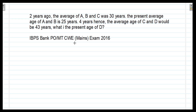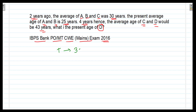Friends, the question is on the screen. Two years ago, the average age of A, B and C was 30 years. The present average age of A and B is 25 years. Four years hence, the average age of C and D would be 43 years. What is the present age of D? This question was asked in the IBPS Bank PO CWE Exam 2016. Two years ago, the average age of A, B and C was 30 years, so their total age was 30 multiplied by 3, which is 90 years.